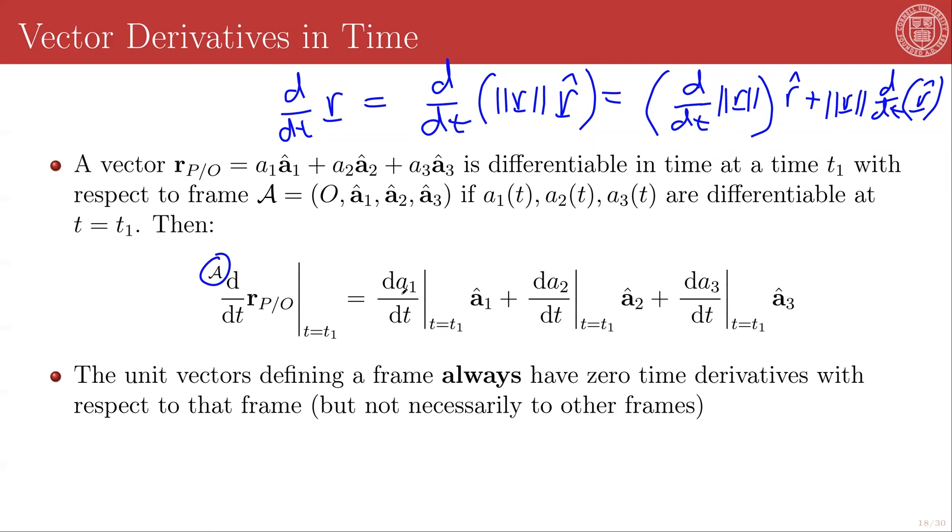And if these three measure numbers A1, A2, A3 are continuously differentiable in time, then I can make things even easier for myself. And I can just say that the A frame derivative of my vector R of P relative to O is going to be A1 dot, where the over dot represents the normal scalar time derivative in the A1 direction plus A2 dot in the A hat two direction plus A3 dot in the A hat three direction, like so.